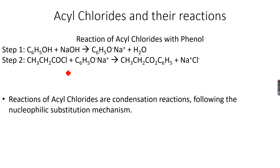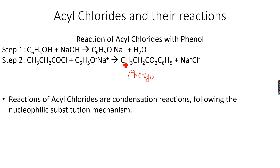If we want to form a phenolic ester — for example phenyl propanoate — we have to react phenol with an acyl chloride, since phenol will not react with a carboxylic acid. The first step is to convert phenol to a phenoxide salt by reacting it with NaOH to form sodium phenoxide. We then add the acyl chloride to the reaction mixture and esterification takes place, giving us phenyl propanoate.